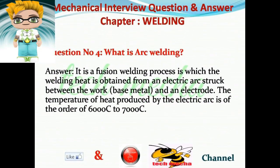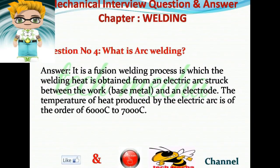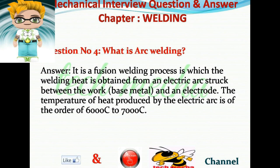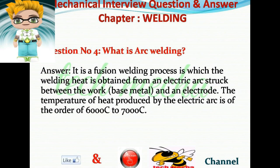Question number four: What is arc welding? Answer: It is a fusion welding process in which the welding heat is obtained from an electric arc struck between the base metal and an electrode. The temperature of heat produced by the electric arc is of the order of 6,000 to 7,000 degrees Celsius.